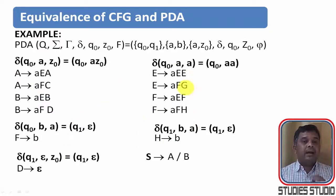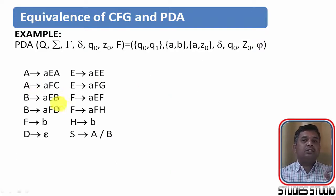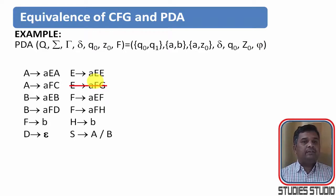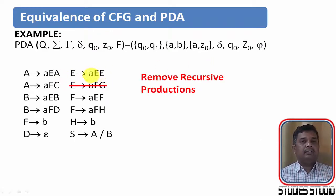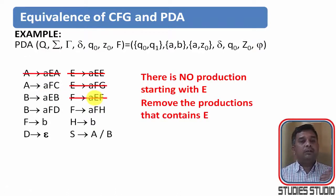In this grammar we need to remove non-generating and non-reachable symbols. There is no production starting with G, but G appears on the right-hand side of some productions, so we remove those. Next, E derives A E E is a recursive production that will never terminate, so we remove it. With E eliminated, any production having E on the right-hand side is also eliminated.